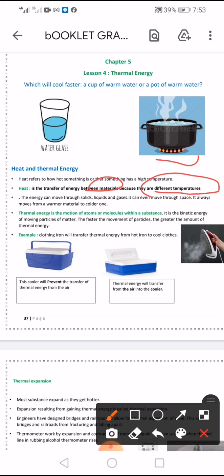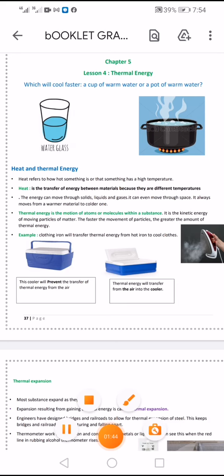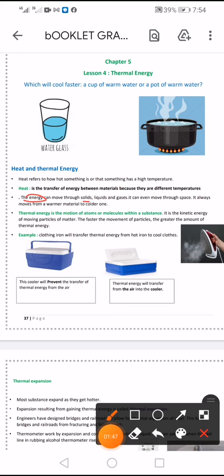For example, here the stove has a high temperature while the water, before it boils, has a low temperature. Transfer from high temperature to low temperature, or high temperature in the stove to the low temperature in the water, is called heat. The energy can move through solid, liquid, and gas - through three states: solid, liquid, gas.